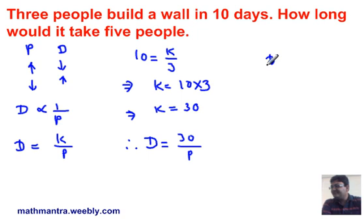Substituting that value, D equals 30 over 5, or D equals 6. Therefore, it will take 6 days to build the same wall for 5 people. Thank you.